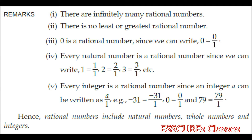We must take note that there are infinitely many rational numbers. There is no least or greatest rational number. 0 is a rational number since we can write 0 as 0 by 1, where 1 is not equal to 0 — it satisfies the P by Q condition. Every natural number is a rational number. Every integer is a rational number since an integer A can also be written as A by 1. Hence, rational numbers include natural numbers, whole numbers, as well as integers.